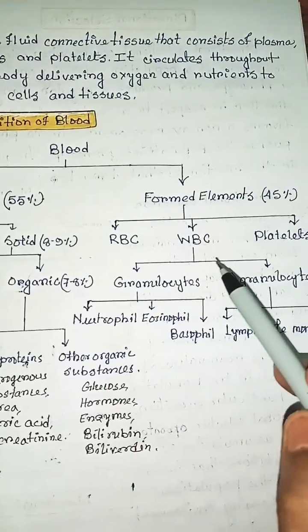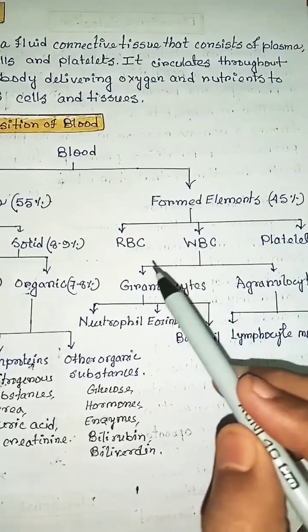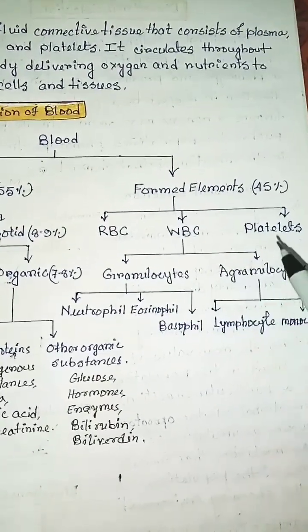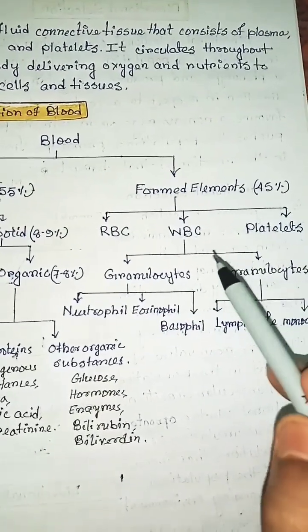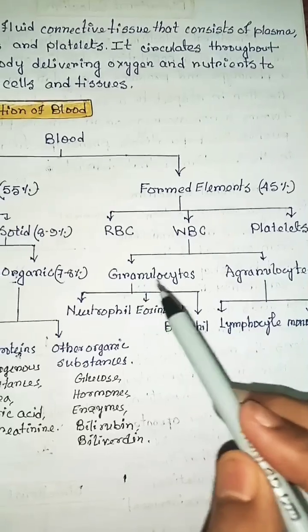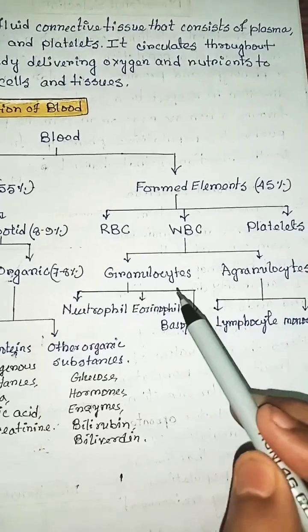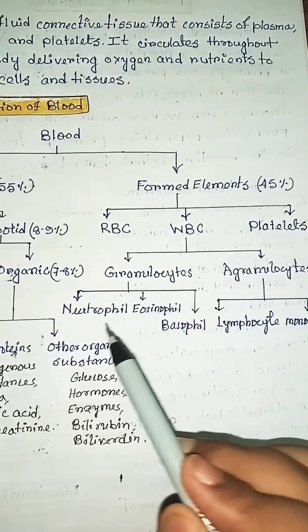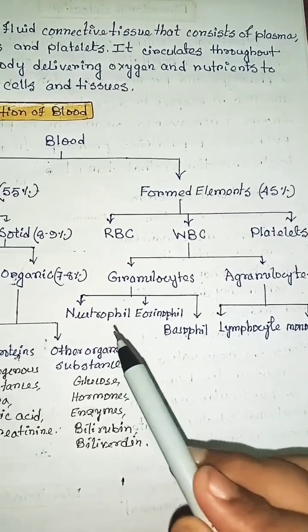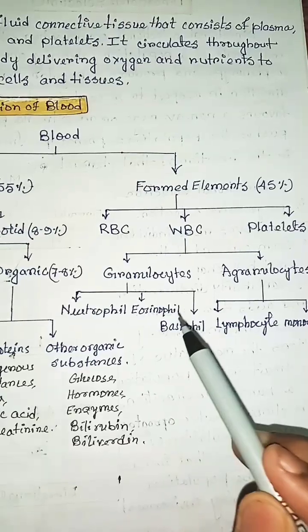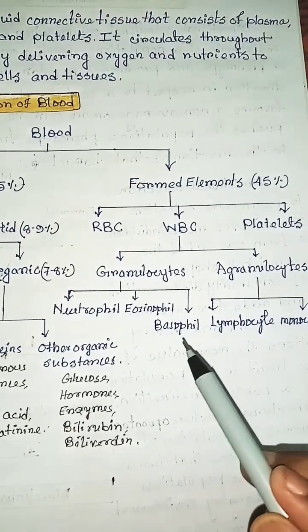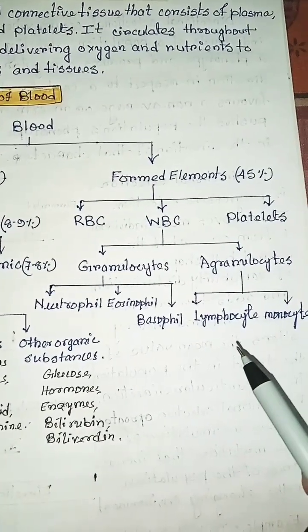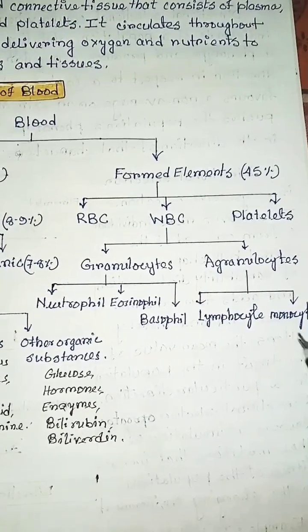Formed elements are divided into three categories: RBC, WBC, and platelets. WBC are divided into granulocytes and agranulocytes. Granulocytes are divided into neutrophil, eosinophil, and basophil. Agranulocytes are divided into lymphocyte and monocyte.